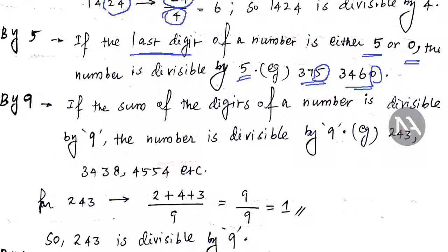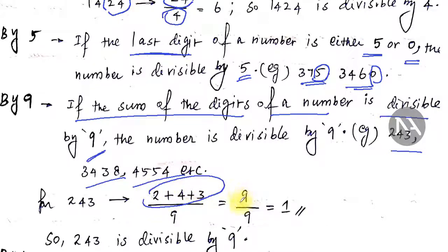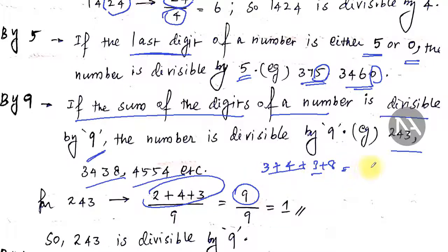For divisibility by 9: if the sum of the digits of the number is divisible by 9, then the whole number is divisible by 9. For example, 243: 2 + 4 + 3 = 9, which is divisible by 9, so 243 is divisible by 9. For 3438: 3 + 4 + 3 + 8 = 18, and 18 is divisible by 9, so 3438 is also divisible by 9.